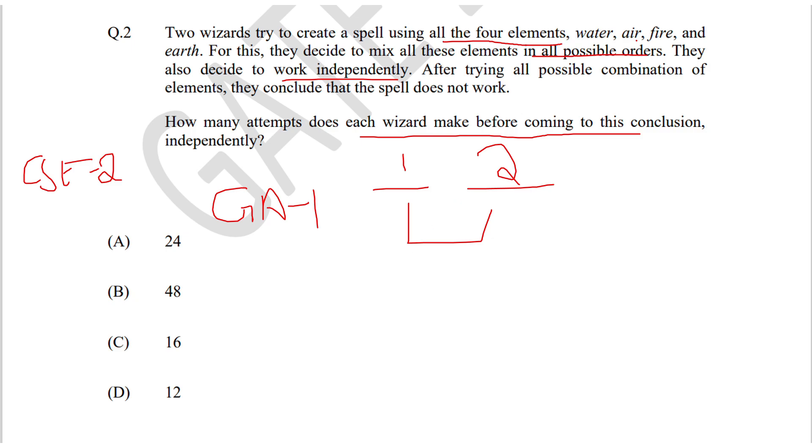There will be four blanks which we have to fill. The first blank can take four values: it can be either air, water, fire, or earth. Since they have used the four elements, each element can occur in the blank only once.